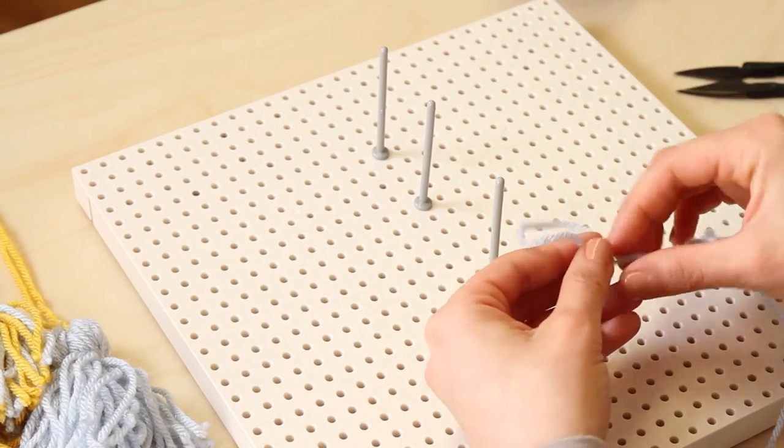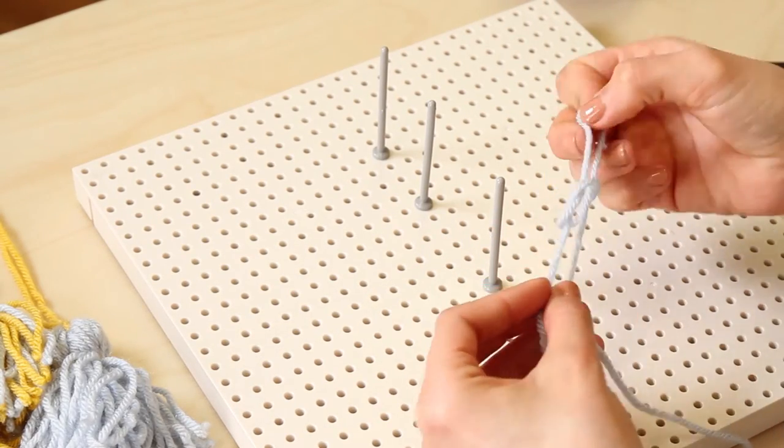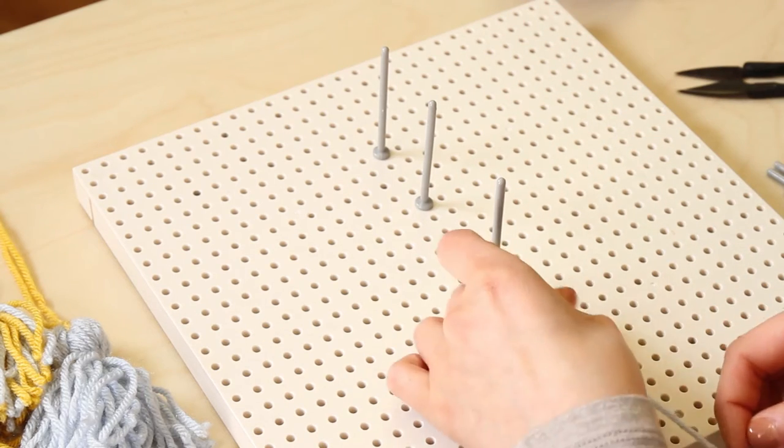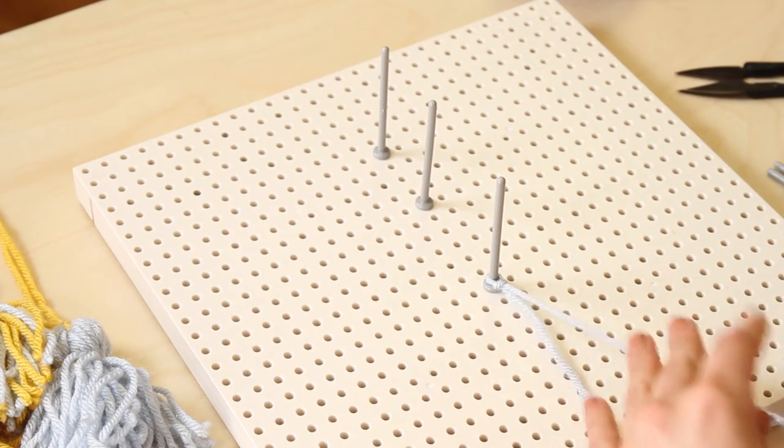Because of the long post, the embellishment pegs can hold many wraps of yarn. Make a slipknot. Place the slipknot on the bottom embellishment peg.